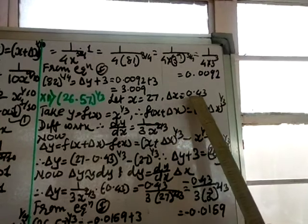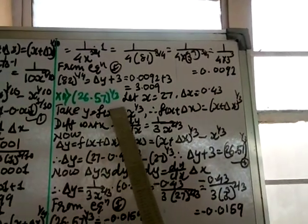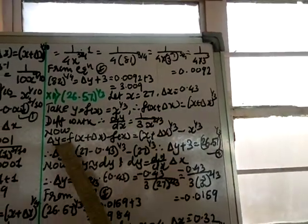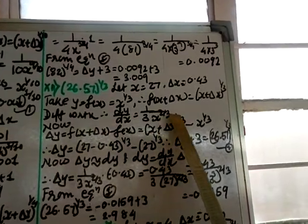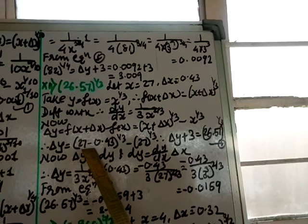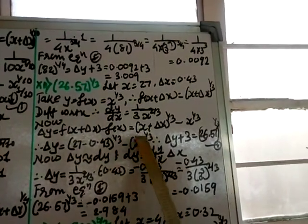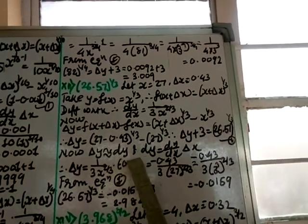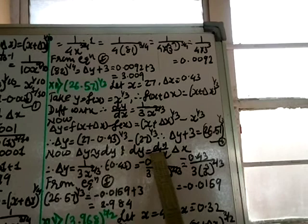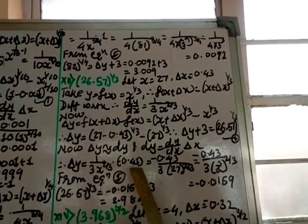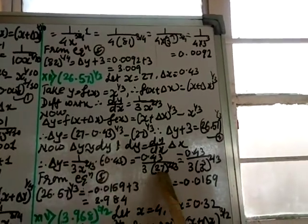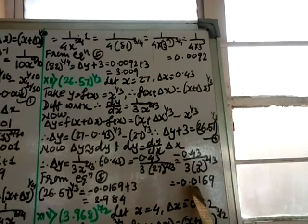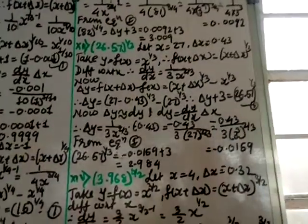Question 12: 26.57^(1/3). Take x = 27 and δx = -0.43. Define y = x^(1/3); dy/dx = (1/3)x^(-2/3). Using δy formula: 26.57^(1/3) - 3 = δy, so δy + 3 = 26.57^(1/3) (equation 1). Then δy = (1/(3×27^(2/3))) × (-0.43) = (-0.43)/(3×9) ≈ -0.0159. Substituting: 26.57^(1/3) ≈ -0.0159 + 3 = 2.984.